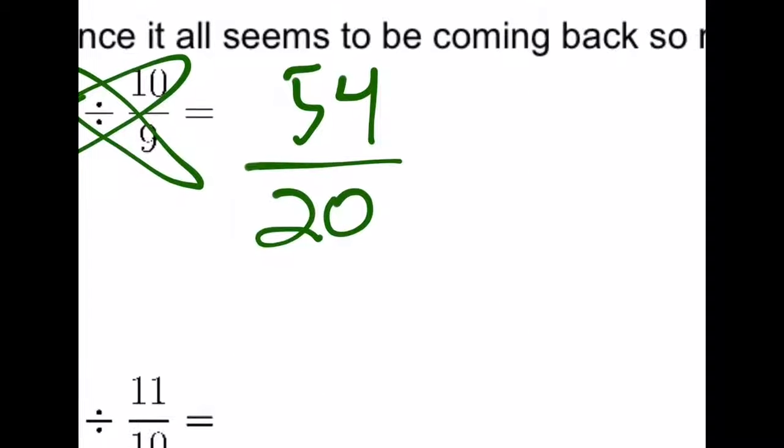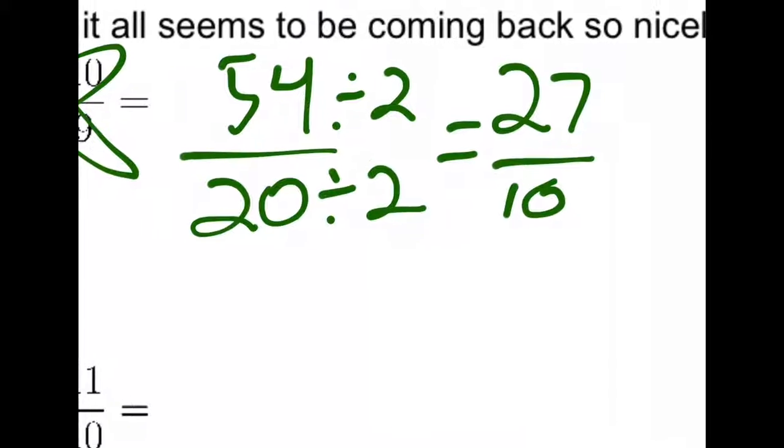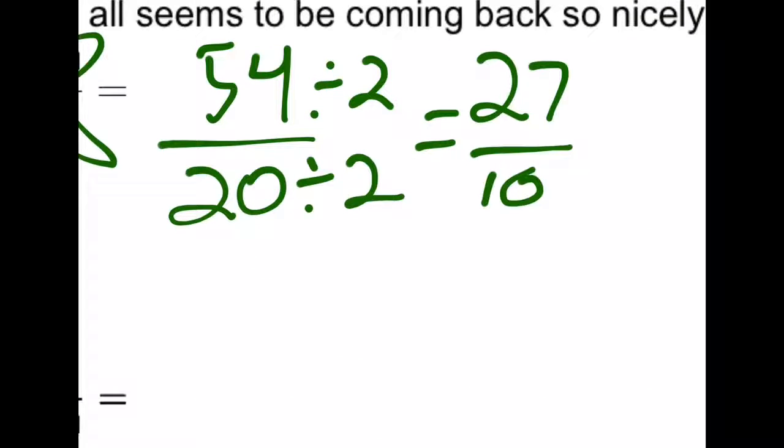Factors of 54 include 9 and 6 as well as 27 and 2. Notice they are both even numbers, so we can divide by 2 on the top and bottom. We end up with 27 over 10. Factors of 27 include 9 and 3, neither of which go evenly into 10, so this is our final answer.